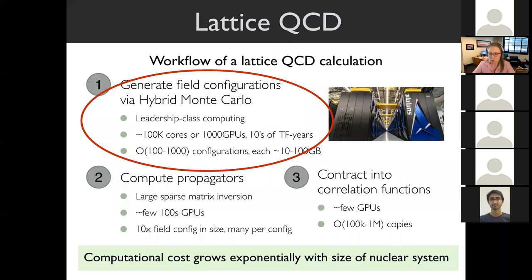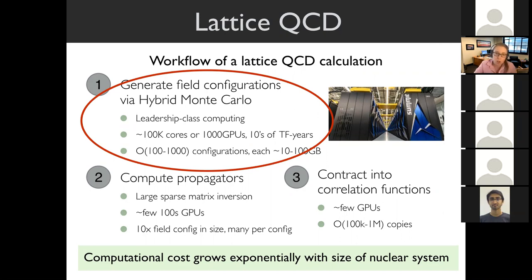The problem for nuclear physics is that although we can apply these methods and get very precise percent-level results for many aspects of the structure of a single proton, the computational cost grows exponentially with the size of the nuclear system. If you want to do calculations for nuclear physics, you're very quickly limited in the size of the nucleus you can study, unless you can develop algorithms that overcome this exponential scaling.